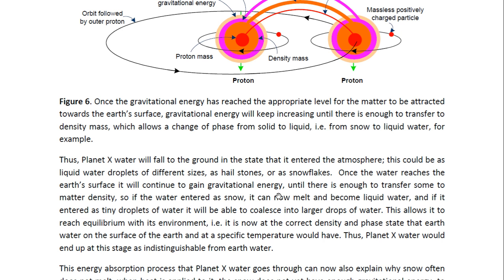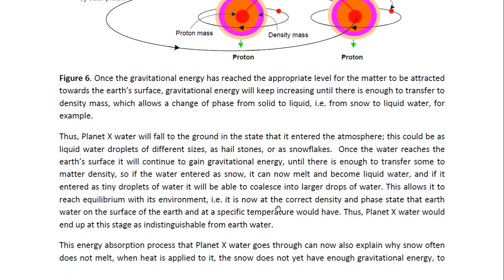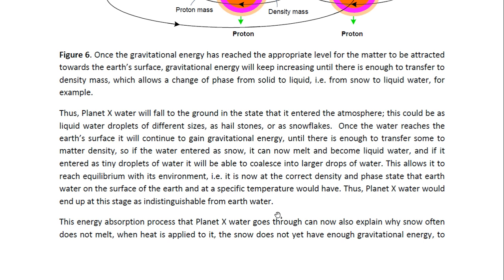Thus Planet X water will fall to the ground in the state that it entered the atmosphere — this could be as liquid water droplets of different sizes, as hailstones, or as snowflakes. Once the water reaches the Earth's surface, it will continue to gain gravitational energy until there is enough to transfer some to matter density. So if the water entered as snow, it can now melt and become liquid water. And if it entered as tiny drops of water, it will be able to coalesce into larger drops. This allows it to reach equilibrium with its environment.